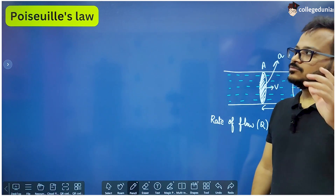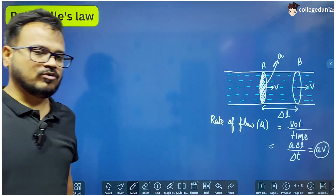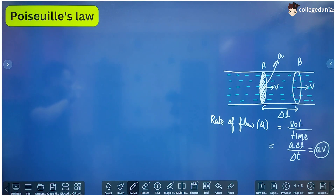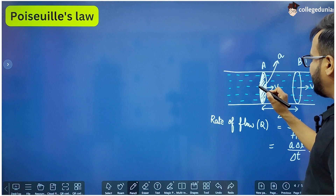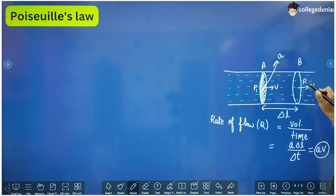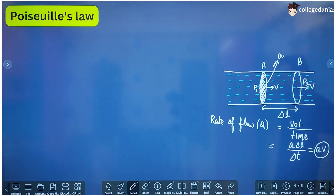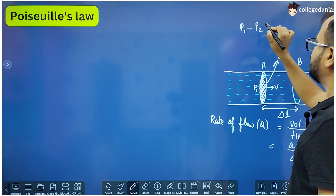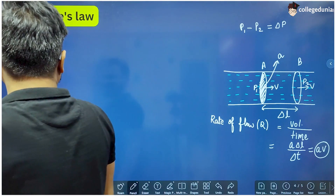Poiseuille's law — also called Poiseuille's formula or Poiseuille's equation — is another formula to find the rate of flow of the liquid. Consider a tube with liquid flowing through it, where the pressure difference between two cross sections is P1 minus P2. Since liquid flows from the high-pressure end to the low-pressure end, P1 is greater than P2. We take this pressure difference as delta P.